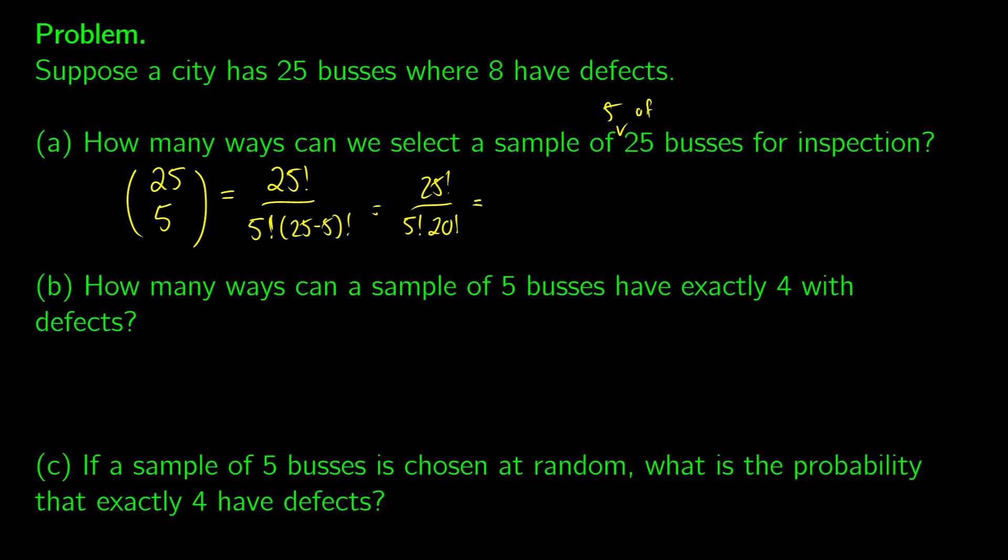If we simplify this a little bit, basically what we're going to get is 25 times 24 times 23 times 22 times 21. At this point, the 20 factorials will cancel out. Then we'll be left with five times four times three times two times one at the bottom. And if we put this into a calculator, we're going to get something like 53,130.